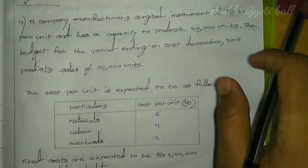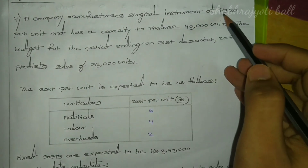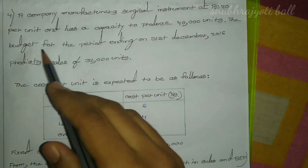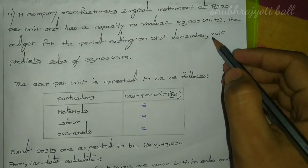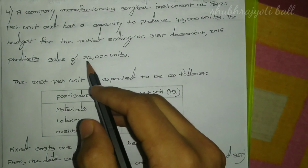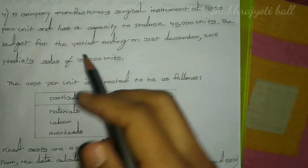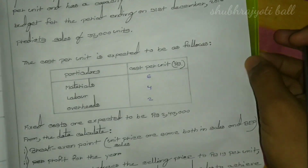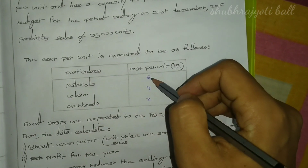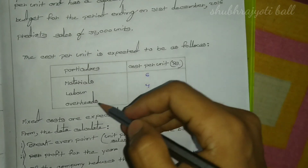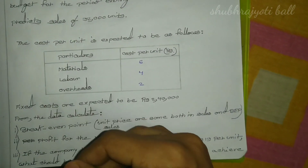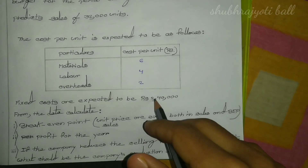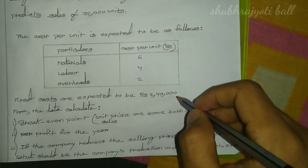My channel se costing exam karenge. A company manufactures surgical instruments at ₹20 per unit and has a capacity to produce 40,000 units. The budget for the period ending 31st December 2016 predicts sales of 32,000 units. The cost per unit is expected to be: material ₹6 per unit, labor ₹4 per unit, overhead ₹2 per unit. Fixed costs are expected to be ₹2,40,000 total.